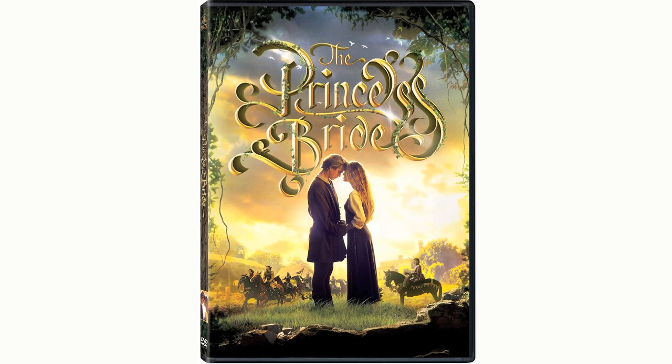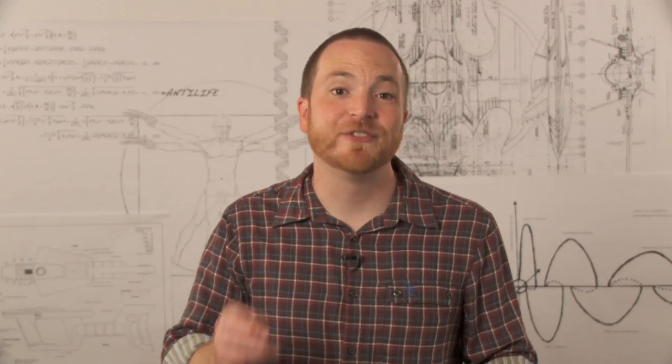In the movie The Princess Bride, the Dread Pirate Roberts is able to defeat the mastermind Vizzini because he built up an immunity to poison. That's a fairy tale, though. Someone becoming immune to a deadly poison in real life is inconceivable. Or is it?